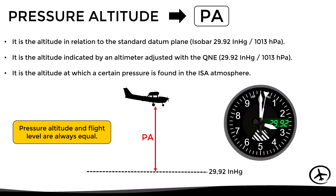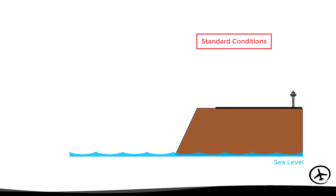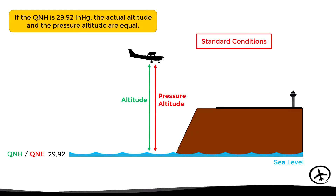Let's look at some examples of how pressure altitude varies depending on the present conditions. Beginning with standard conditions, the sea level pressure is 29.92 inches of mercury, therefore as the QNH and QNE are equal, we can say that the pressure altitude is equal to the actual altitude.